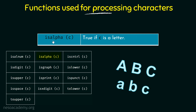Next we have ISALPHA, which returns true if C is a letter. We are basically checking if C is an alphabet. If it is a lowercase alphabet or an uppercase alphabet it returns true, and if it is a digit or some other special character then it returns false.